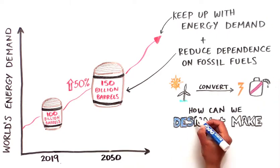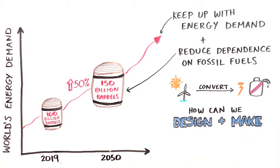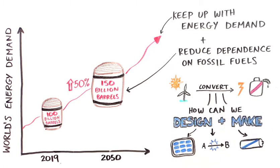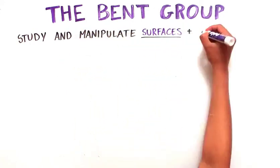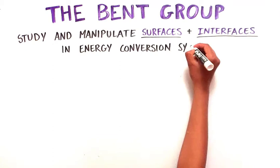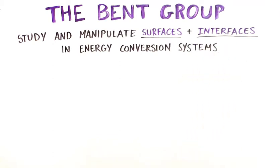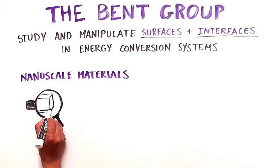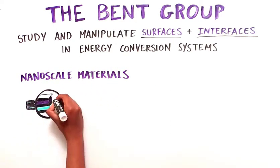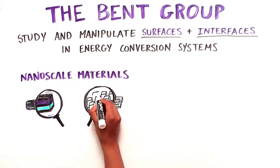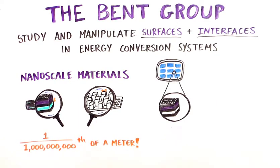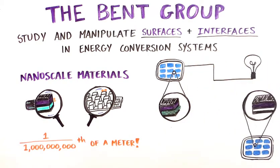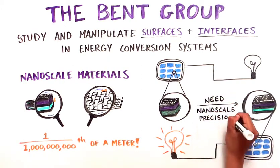But how can we design and make the next generation of high-efficiency, sustainable energy technologies like solar cells, catalysts, and batteries? The Bend Group at Stanford addresses this challenge by studying and manipulating the chemical properties of surfaces and interfaces in energy conversion systems. Devices for renewable energy capture and storage are often composed of nanoscale materials — multi-layer stacks of thin films or extremely complex three-dimensional nanostructures with features as small as a billionth of a meter. At such small scales, the properties of the material surface and interfaces have huge effects on device performance. Therefore, it's important that the methods we use to make these devices have nanoscale precision.